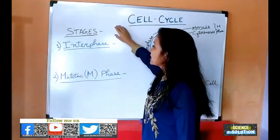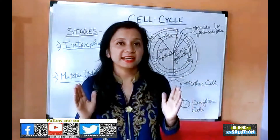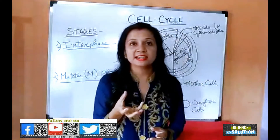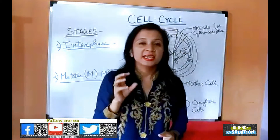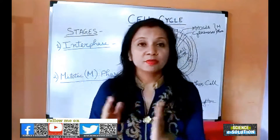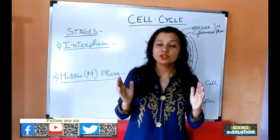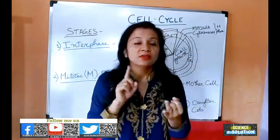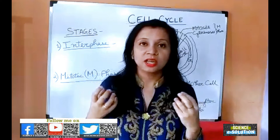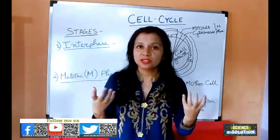Before going into the stages, we must know what the different contents inside the cell are. If it is a eukaryotic cell, it contains a well-defined nucleus where its genetic material lies, along with certain organelles and cytoplasm. Before a cell divides into two parts, there should be replication of its organelles and DNA material, and its cytoplasm must also grow, and proteins should be doubled so that it can divide into two daughter cells.